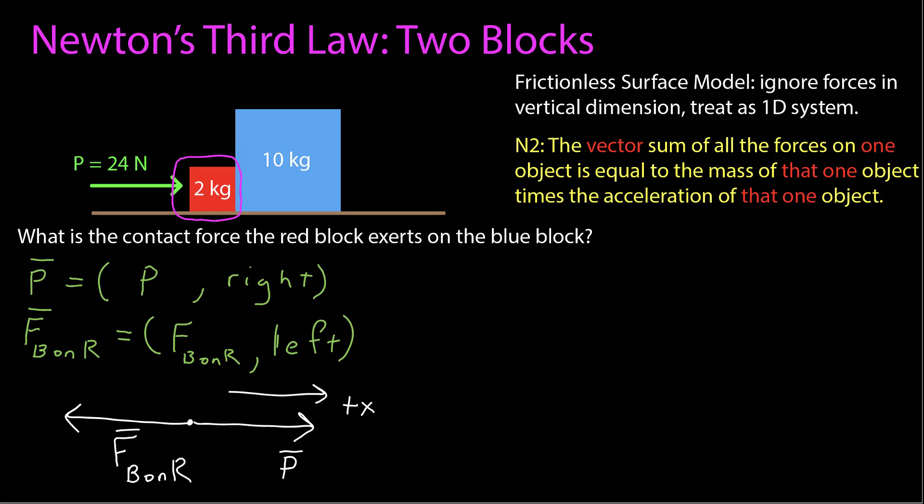I'll draw a free body diagram and set the positive x-axis to the right. Using one-dimensional vector notation, the scalar equation becomes: positive pushing force minus the magnitude of the contact force of blue on red equals the mass of the red block times its acceleration. But this doesn't give me everything I need — I don't know the acceleration of the red block or the contact force, so I can't solve yet. I'll keep this in mind and continue.